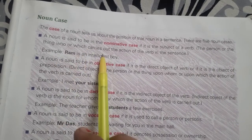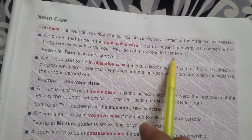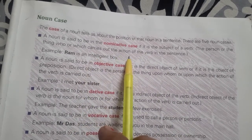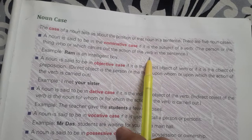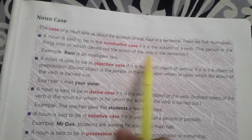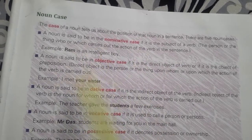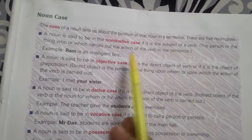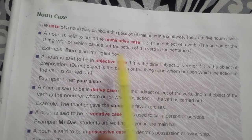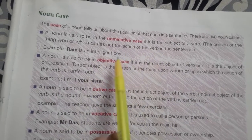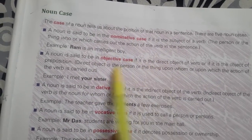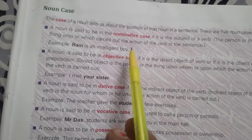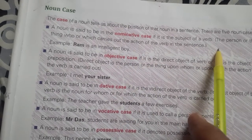The person or thing which carries out the action of the verb in the sentence is called a nominative case. In simple language, that is called a nominative case.